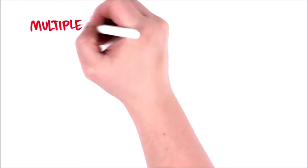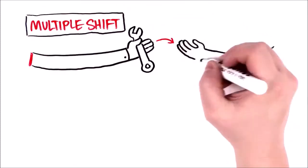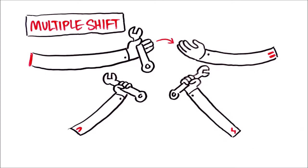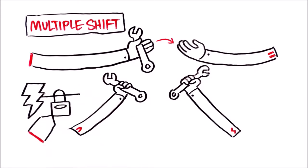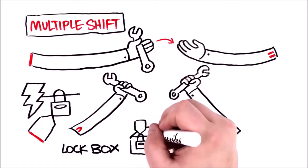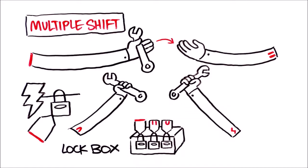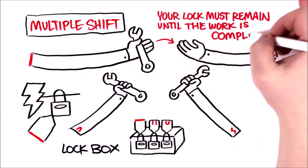What about multiple shift work? Whether it's a situation where you're passing the work onto the next shift or you're performing a group LOTO procedure, it's critical that you maintain continuity of hazardous energy control. Be sure you never leave a lockbox or energy source uncontrolled or unlocked. Usually, one individual is assigned primary responsibility for the lockout. That individual's lock must remain on until the work is complete.